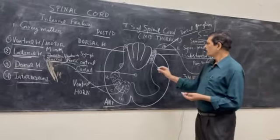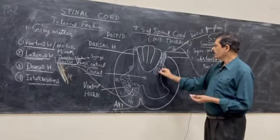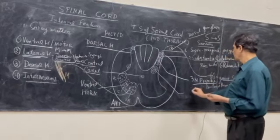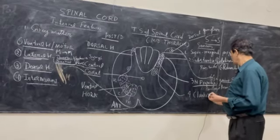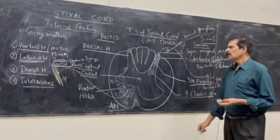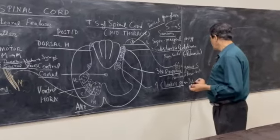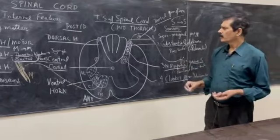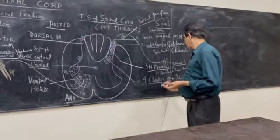Another group of nucleus is present in the deep part of the posterior horn — this is Clarke's column group of posterior horn cells. It has crossed to the opposite side and interconnects both sides of the posterior horn. They are also concerned with pain sensations.